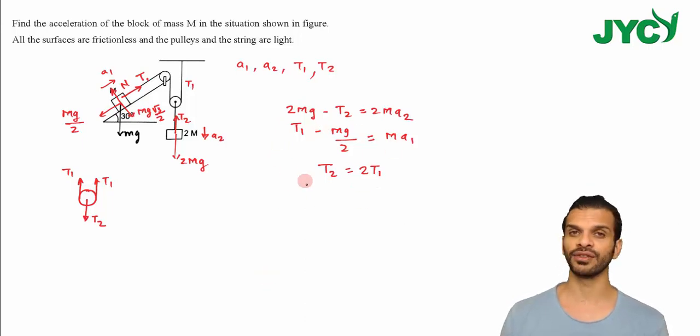The equation that remains is the constraint equation. There are basically 2 strings. The 2M block is going down with A2, so the pulley attached to that string will also go with A2. So the pulley's acceleration is also A2. This block's acceleration is A1.